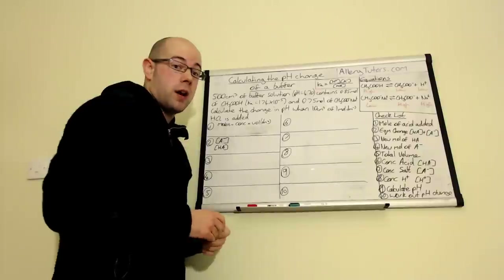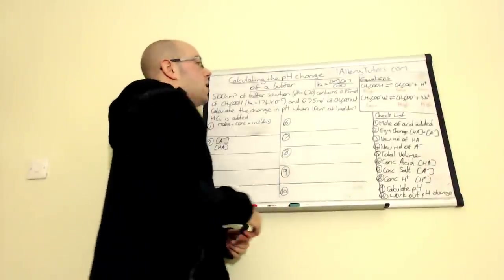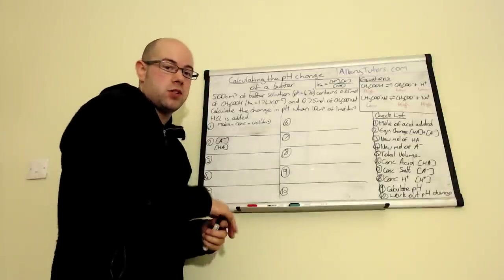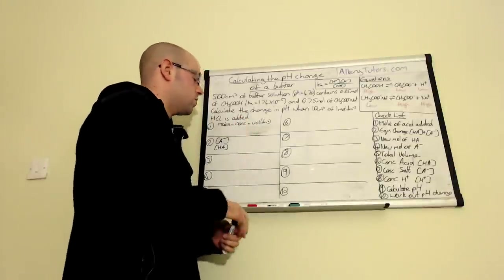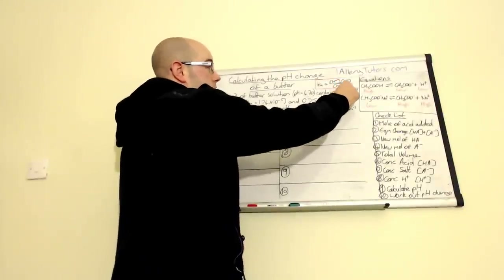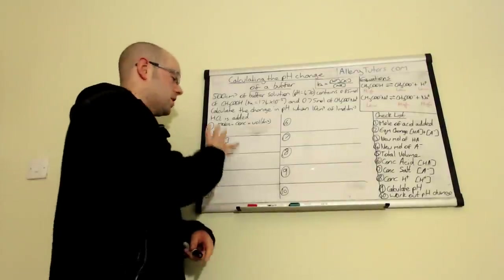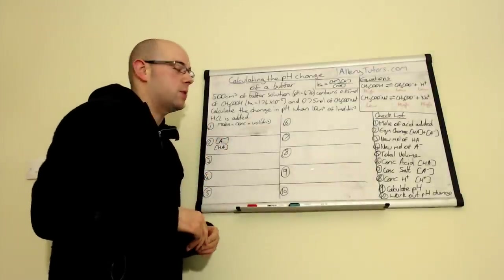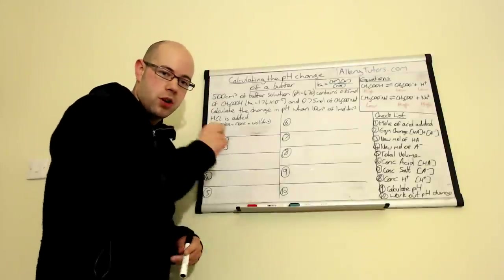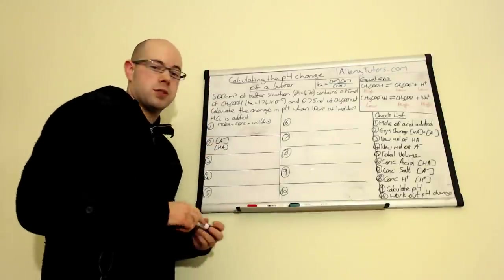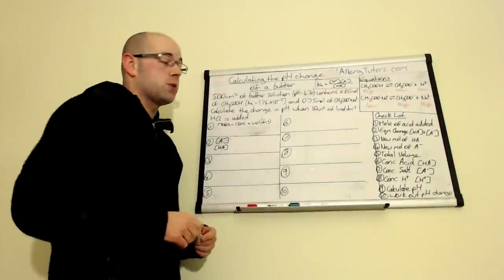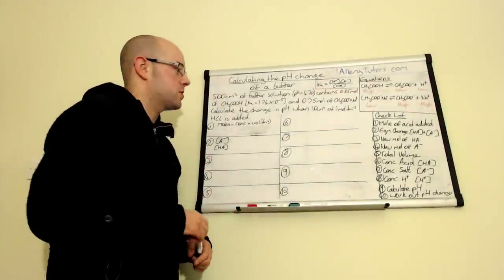All these steps are built around the Ka expression. We have a weak acid involved, so we need to work in terms of Ka. Effectively, we're trying to work out the concentration of H⁺ to find the pH of our solution. All the steps we're doing involve working out the concentration of HA and A⁻. We have a checklist with 10 steps. The first stage is to work out the number of moles of acid we've added to our buffer solution.